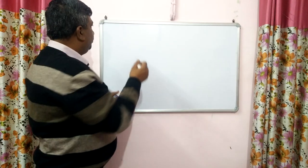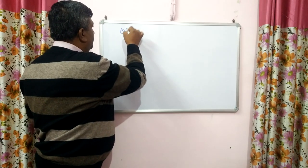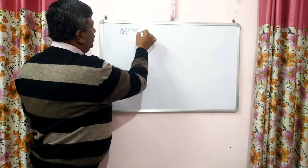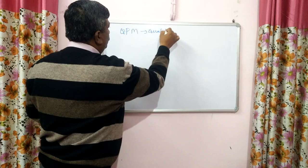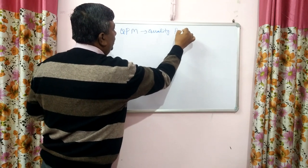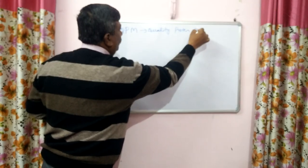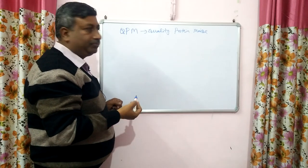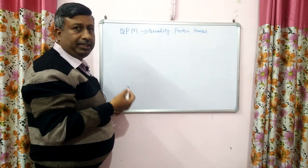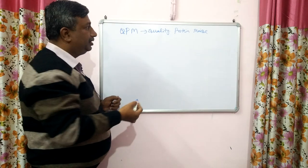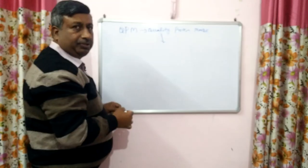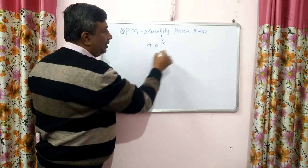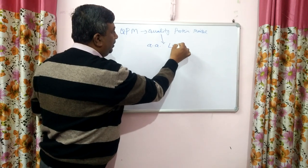QPM is a maize whose protein is of superior quality. Q stands for Quality, P for Protein, and M for Maize. The quality of protein in QPM is superior to normal maize in terms of two amino acids: lysine and tryptophan.